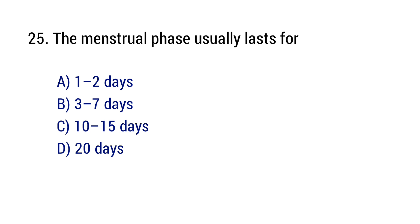Question number 25. The menstrual phase usually lasts for? The right answer is option B: Three to seven days.